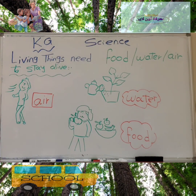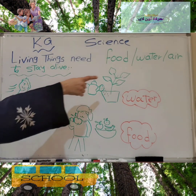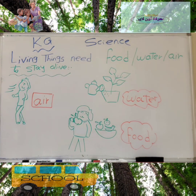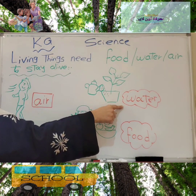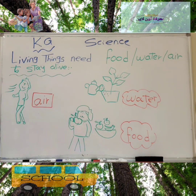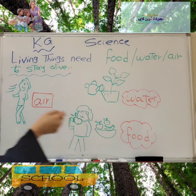What are the main needs for any living thing to stay alive? We have three main needs: food, water, and air. We need air to breathe. We need water to drink. We need food to eat.